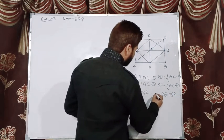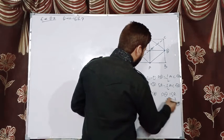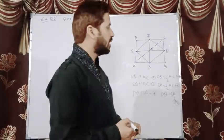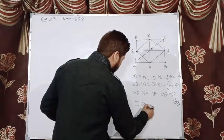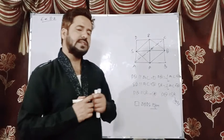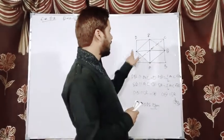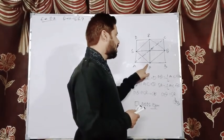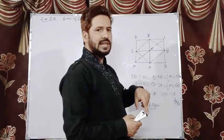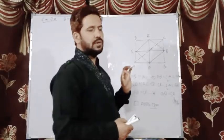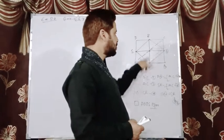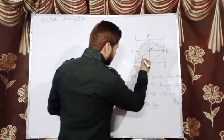From these results we come to know that in quadrilateral PQRS, one pair of opposite sides — PQ and SR — is equal as well as parallel. Therefore quadrilateral PQRS will be a parallelogram. Since PQRS is a parallelogram, and PR and SQ are its two diagonals, therefore by the property of a parallelogram the diagonals bisect each other.